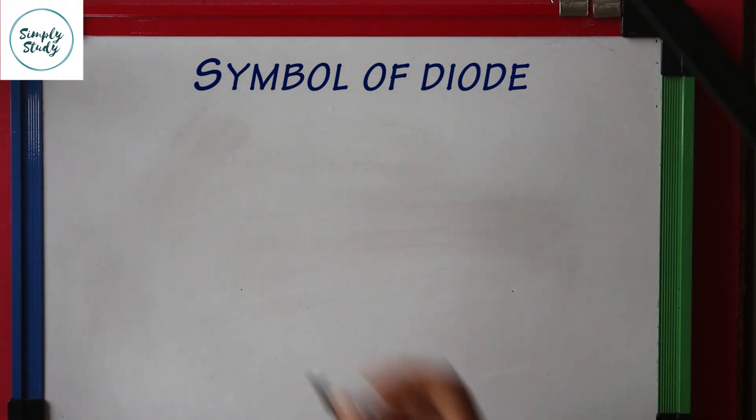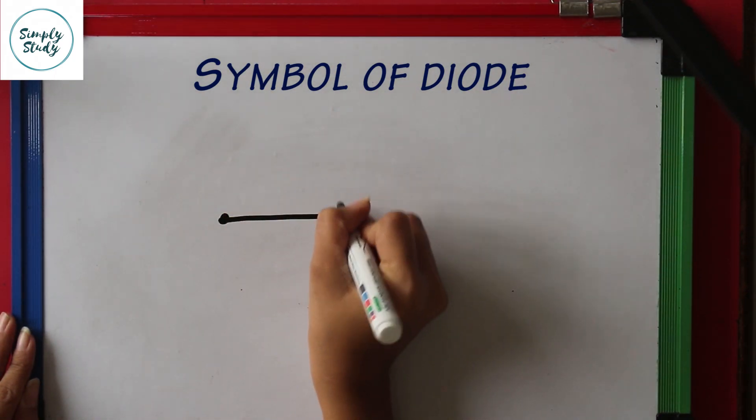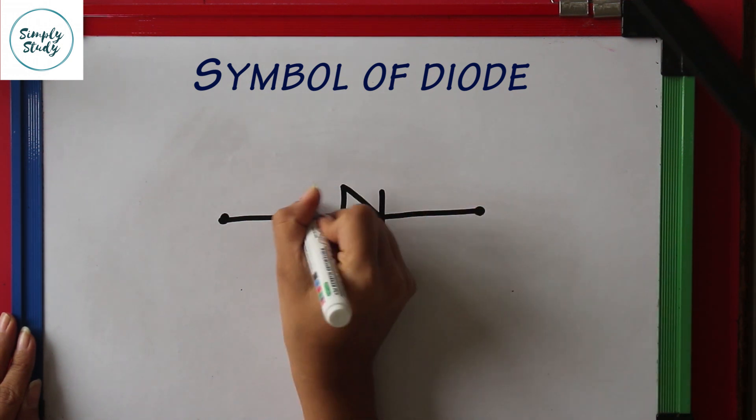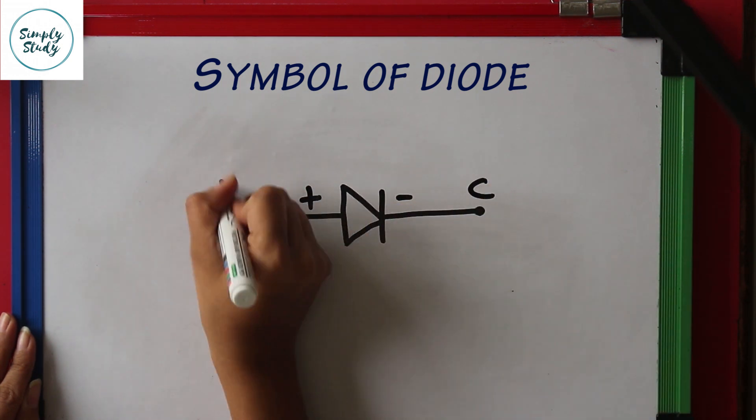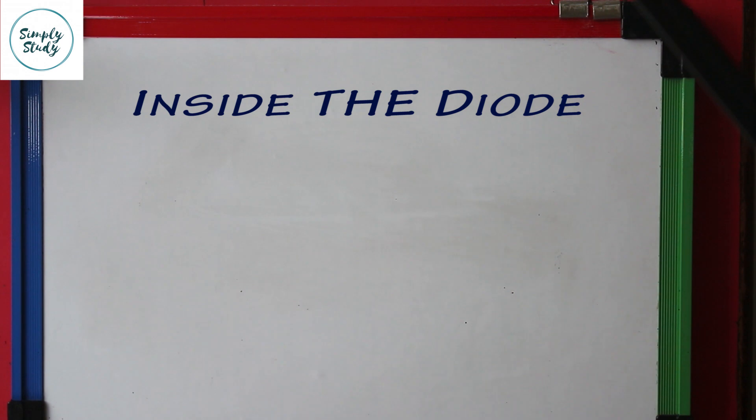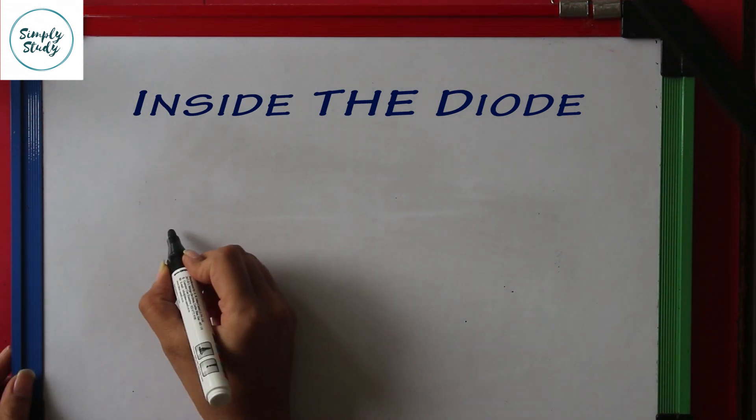Symbolically it is represented like this: anode and cathode. Anode is the positive terminal of the diode and cathode is the negative terminal of the diode. Now let's see what's inside the diode.